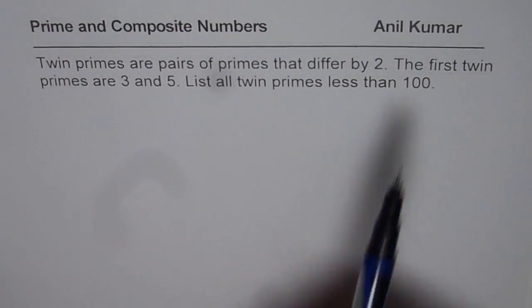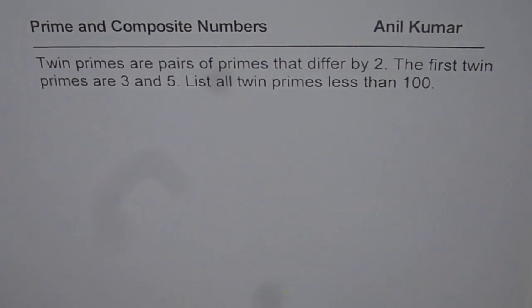List all twin primes less than 100. So that is the question for you. You need to list all the twin primes, that is prime numbers which differ by 2, as the solution for this question. So you can pause the video and then look into my suggestion. Now here is how we can do it.